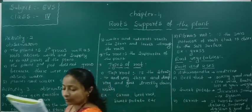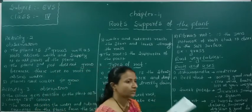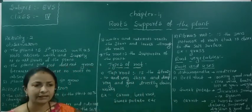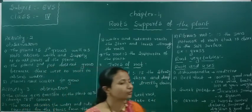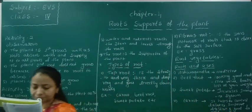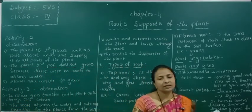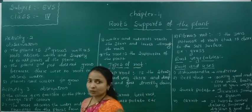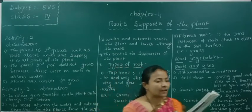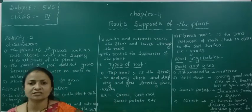Fill both the pots with soil and place one plant in each pot — one plant with roots cut, and the other with roots intact. Keep them in sunlight and pour sufficient water daily. After 2 to 3 days, observe the changes in the plants.